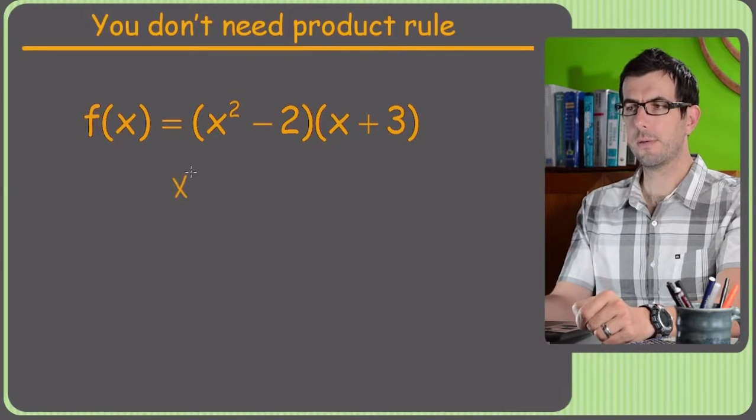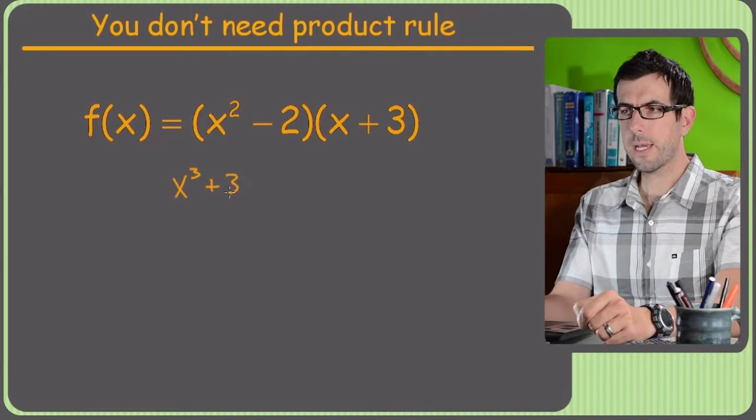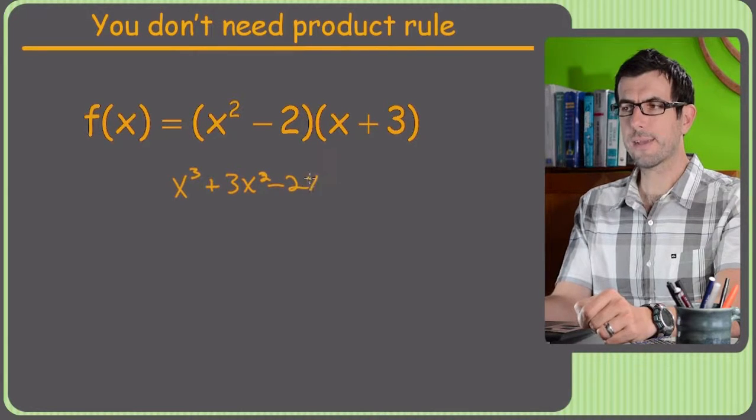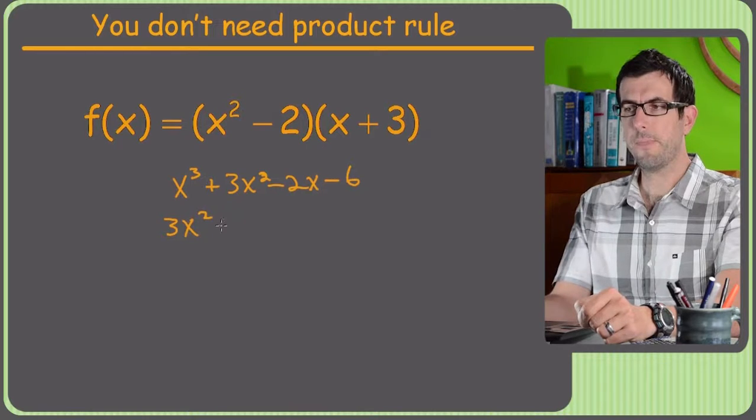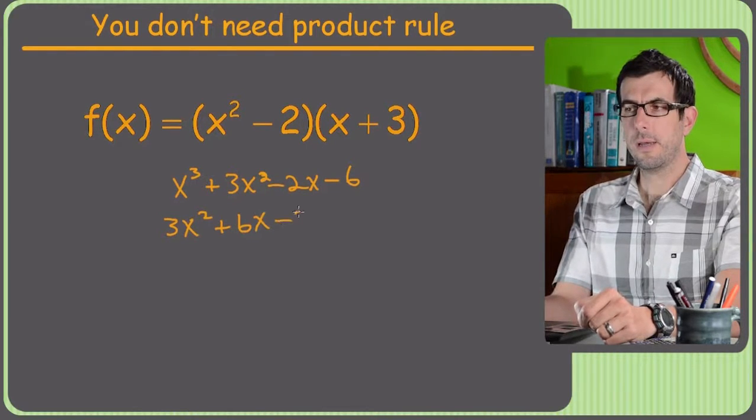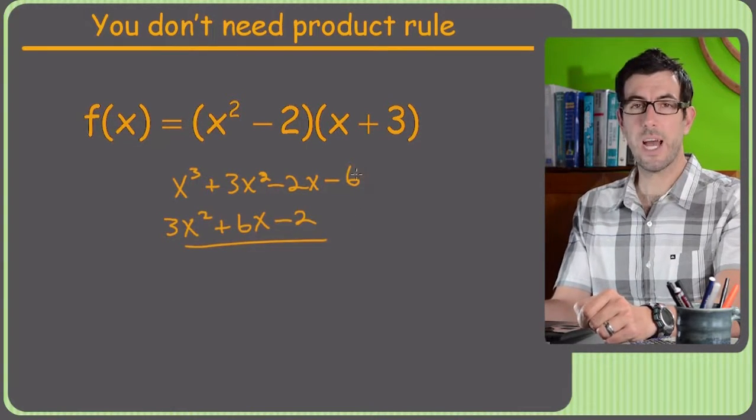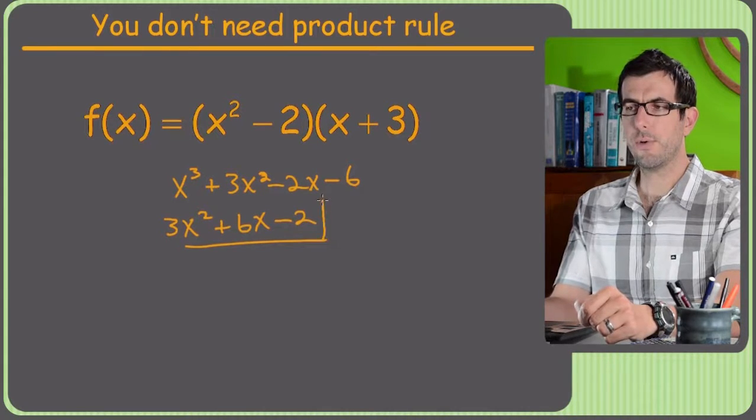So we'll get x cubed plus 3x squared, oops, minus 2x minus 6. Now it's just a polynomial, 3x squared plus 6x minus 2. And of course the derivative of a constant is 0, so we're already done.